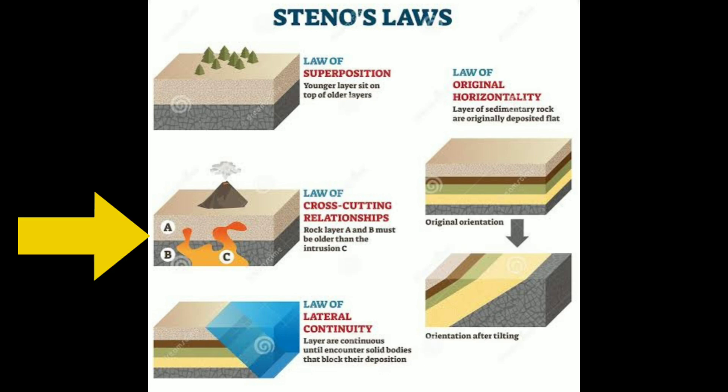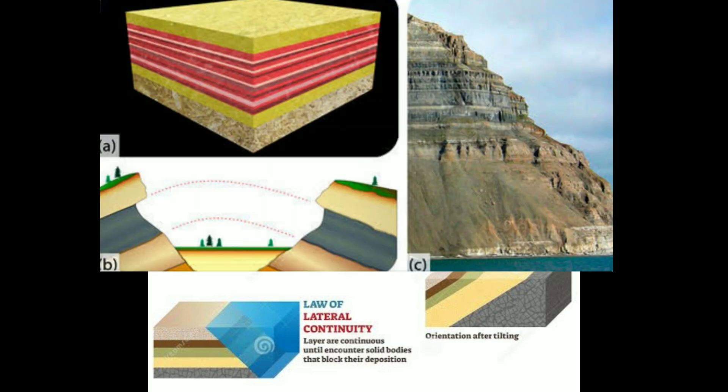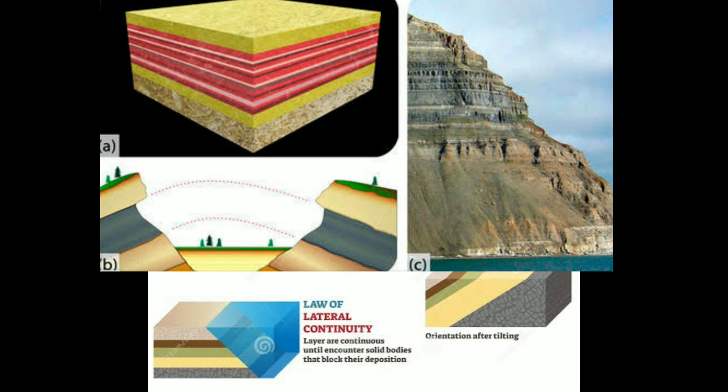The law of cross-cutting relationships states that rock layers A and B must be older than the intrusion C that disturbs them. The law of lateral continuity states that layers of rock are continuous until they encounter other solid bodies that block their deposition or until they are acted upon by agents that appeared after deposition took place.